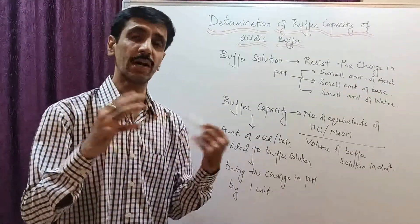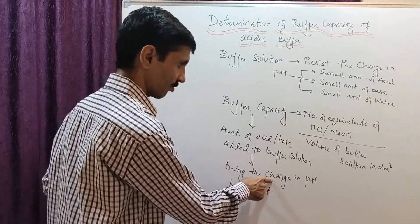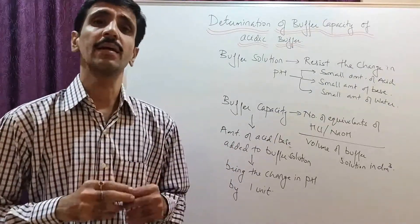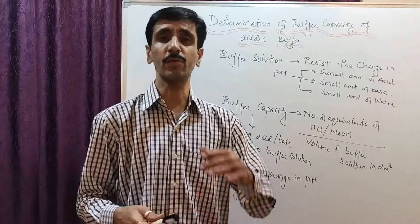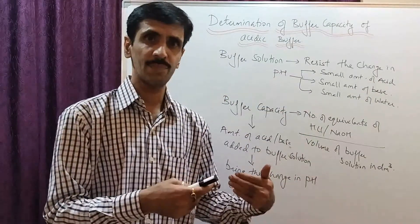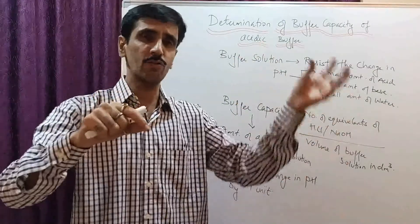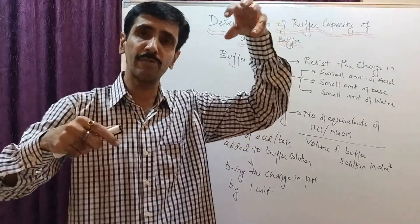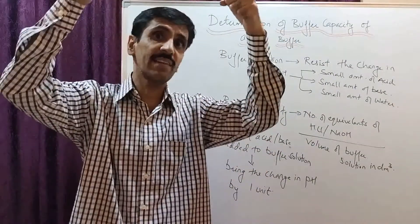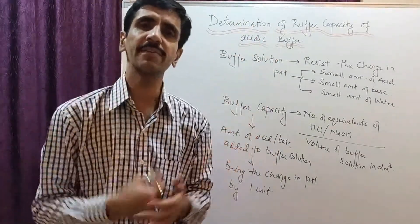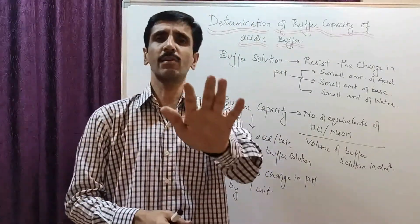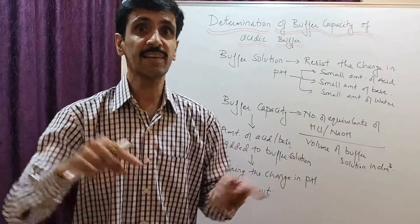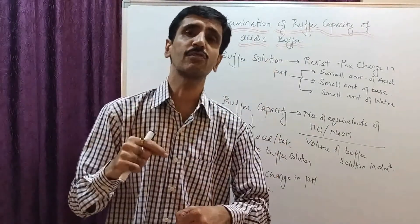If I add acid, the pH will decrease. So from the original pH, I measure how much volume of acid I need to add so that the pH decreases by one unit. For example, if the buffer solution has a pH of 4, I add acid until the pH becomes 3 — that is one unit change.